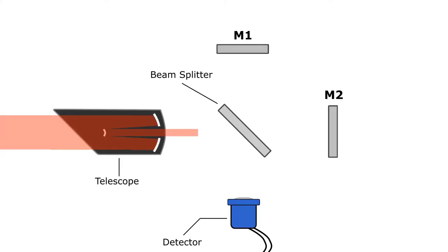An interferometer takes a beam of light, splits it into two beams, then reflects those beams from two separate mirrors back to the beam splitter where they're recombined to form the final beam which is then sent to the detector.